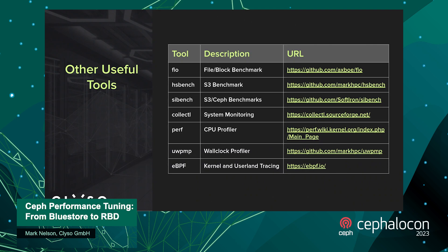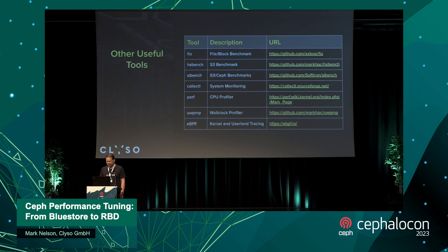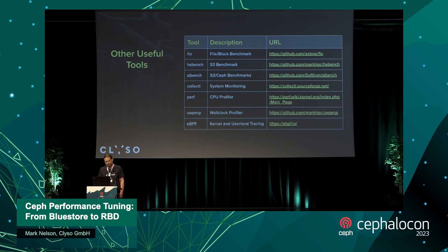Other useful tools: FIO — I hope everyone knows what FIO is. HSBench is an S3 benchmark that I wrote, very much geared at getting a lot of latency data and other information out of your system. It's pretty fast but doesn't have some features that MiniIO Warp or CosBench have, so it's a slightly different market. CollectL for system monitoring. Perf for CPU profiling. UWPMP is a wall clock profiler I wrote that can use LibDW or LibOnwind backends — really useful if you're interested in profiling OSDs.